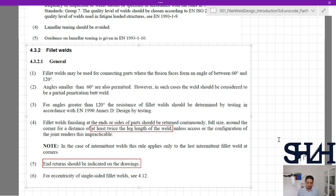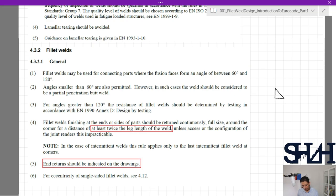Fillet welds finishing at the ends or sides of parts should be returned continuously full size around the corner for a distance of at least twice the leg length of the weld. So if we look at one fillet weld, this is the leg size—let's say W. If this is the leg size and we have this part to be welded to the other part, and if we are going to weld here, then it should have a return with the minimum of 2W return length.